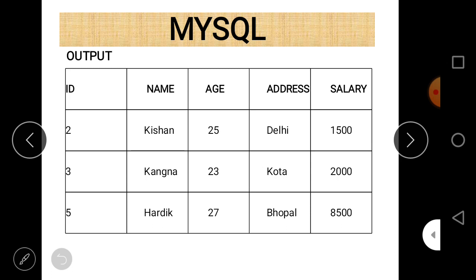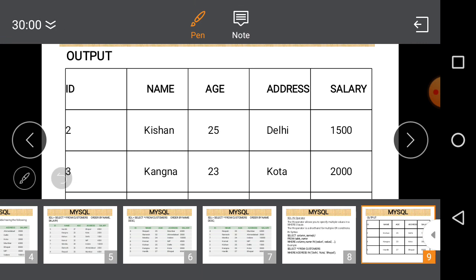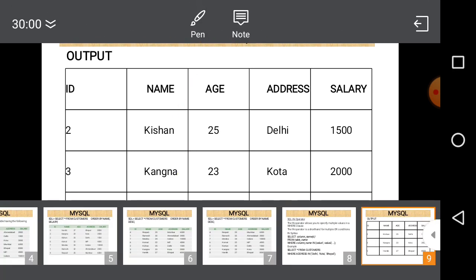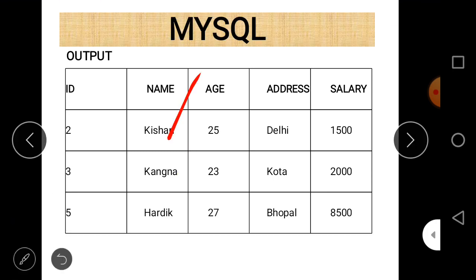You can see the output — it displays the names of customers and their details related to all three cities: Delhi, Kota, or Bhopal.